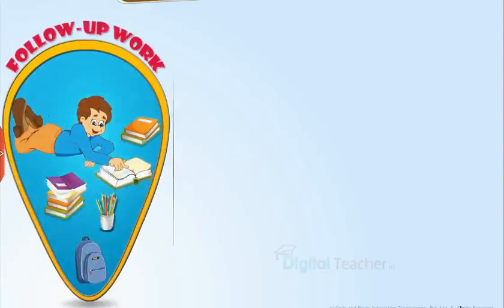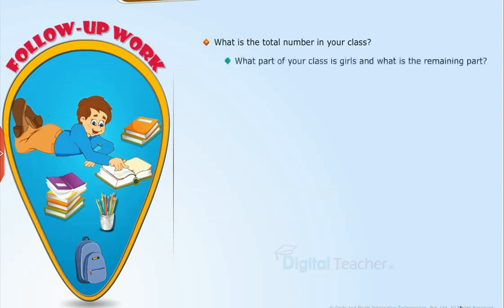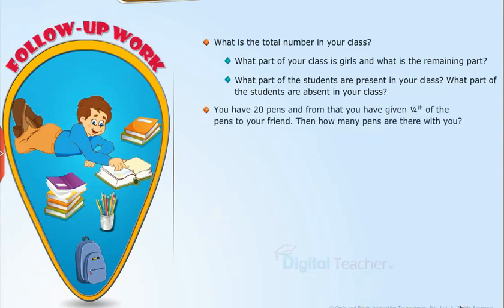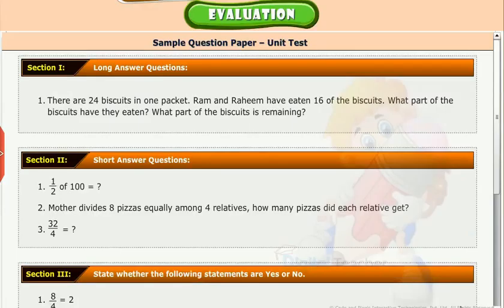Follow-up work: What is the total number in your class? What part of your class is girls and what is the remaining part? What part of the students are present in your class? What part of the students are absent? You have 20 pens and from that you have given 1/4 of the pens to your friend. Then how many pens are there with you?